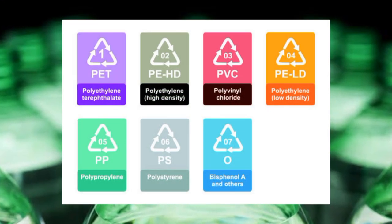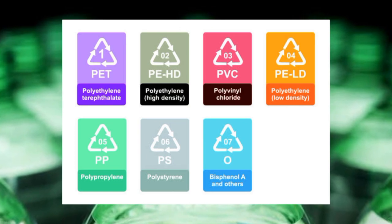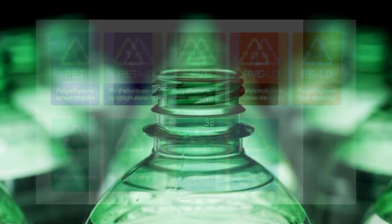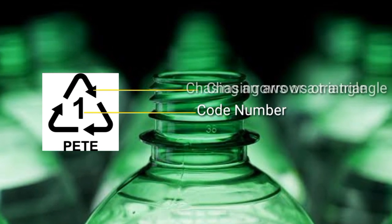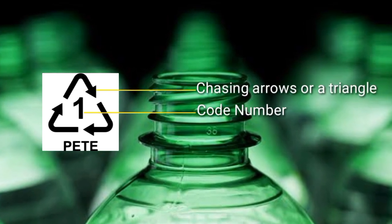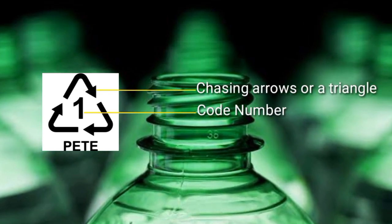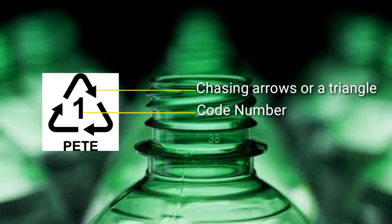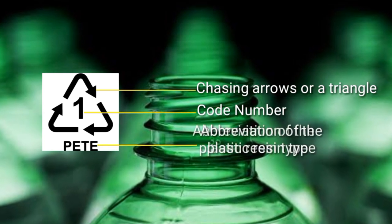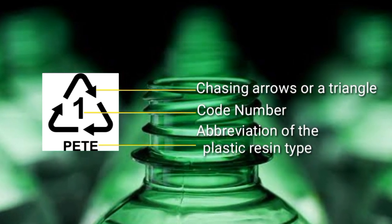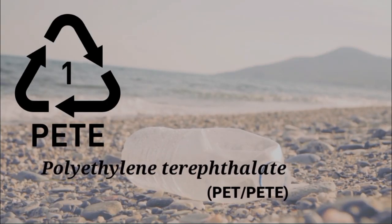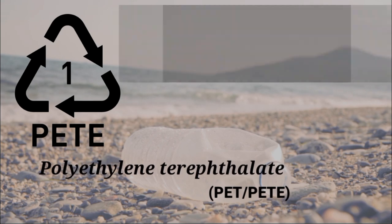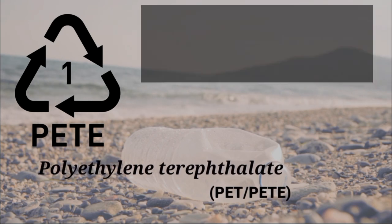There are seven Resin Identification Codes, represented by the numbers one through seven. The symbol consists of one of these numbers surrounded by chasing arrows in a triangular shape, or simply a triangle, accompanied by an abbreviation of the plastic resin type. Code number one: Polyethylene Terephthalate (PET) — can be recycled.